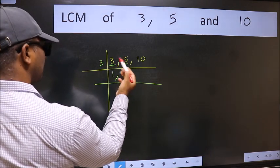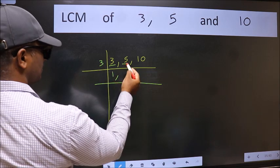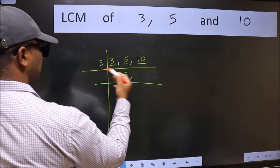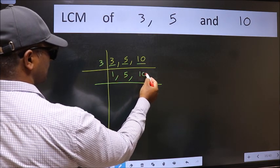The other number 5 is not divisible by 3 so we write it down as it is. The other number 10 is not divisible by 3 so we write it down as it is.